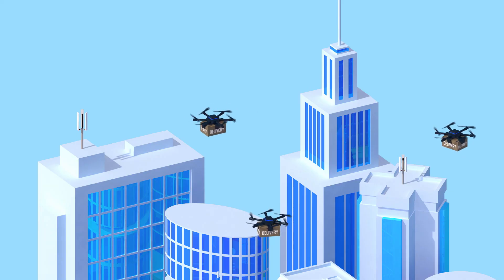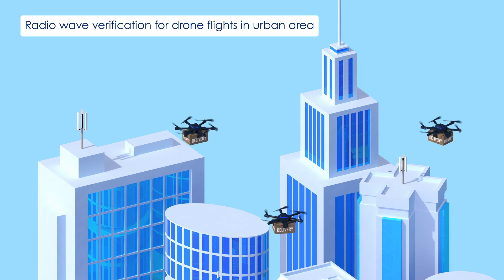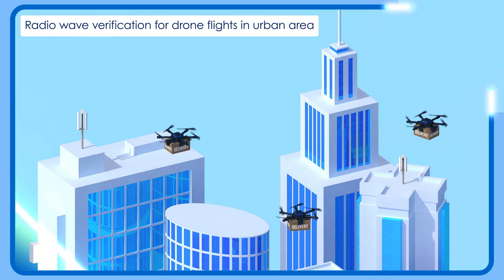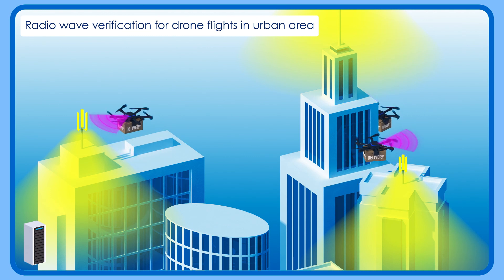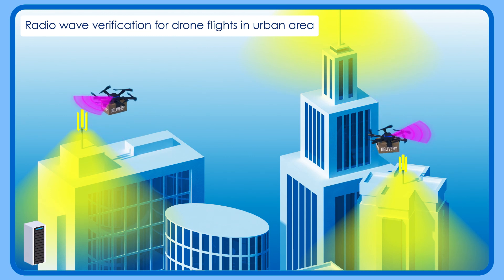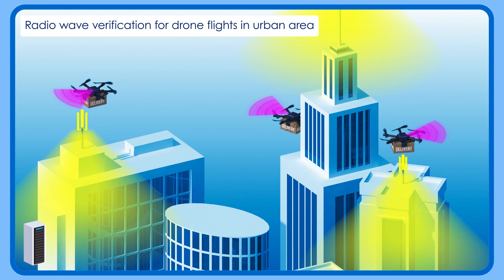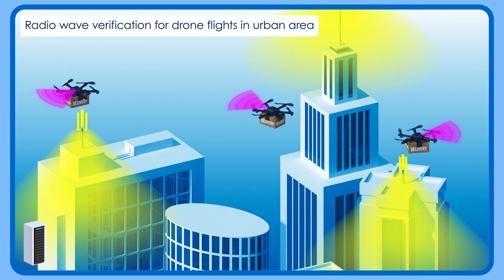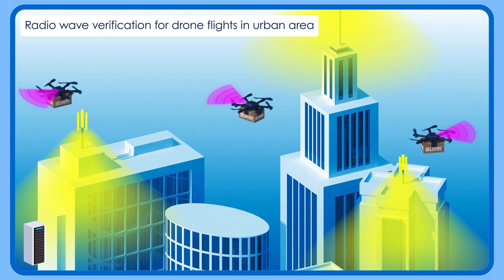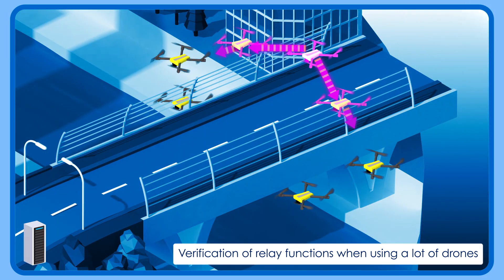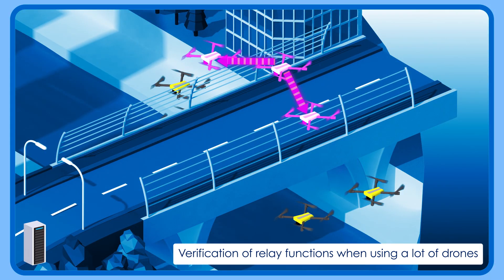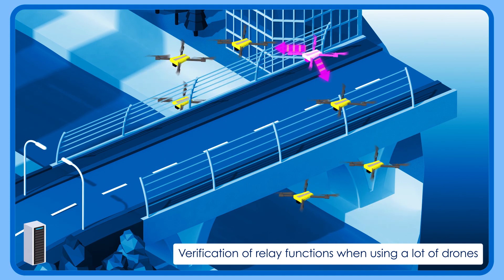In the drone field, where it is expected to be used for delivery in urban areas, it can reproduce actual buildings or radio wave interference, and verify communication performance in complex 3D environments. Moreover, it can verify wireless relay function in situations where a large number of drones fly as a coordinated fleet, such as large-scale infrastructure inspections.